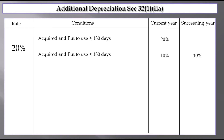If acquired and put to use for less than 180 days, the current year is 10% and the succeeding year is 10%. In this case, there will be an amendment in Finance Act 2015. In the current year, if less than 180 days, the current year is 10% and we will claim the remaining 10% in the next year.